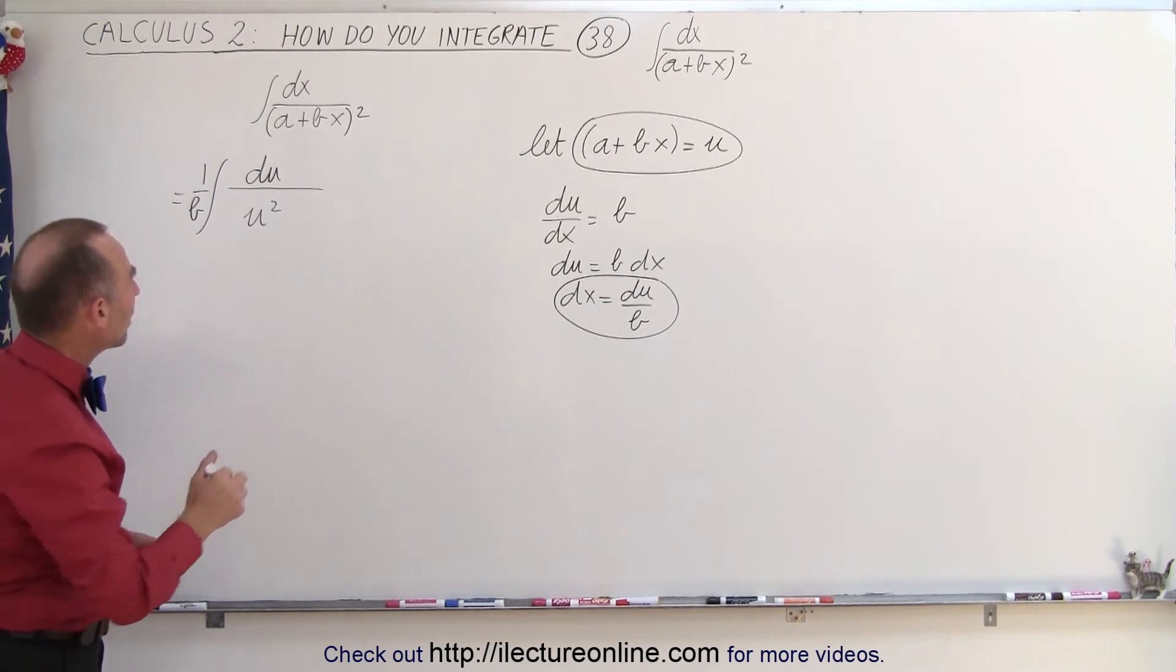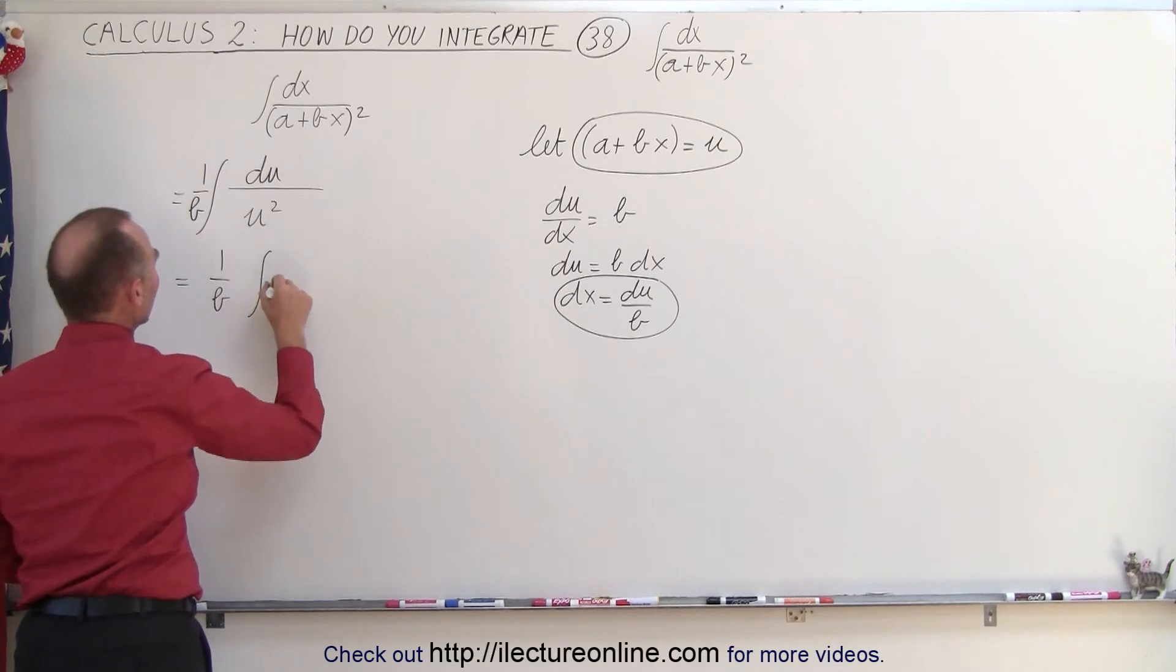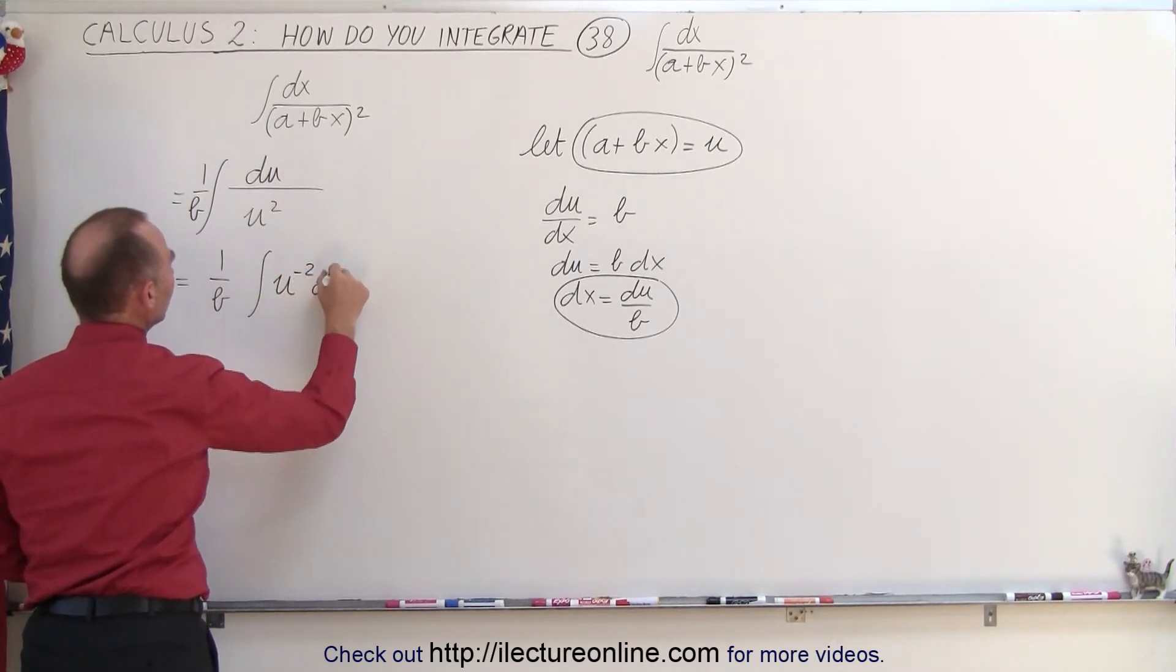What we typically want to do now is bring the u to the numerator, so this becomes 1 over b, times the integral of u to the minus 2 du.